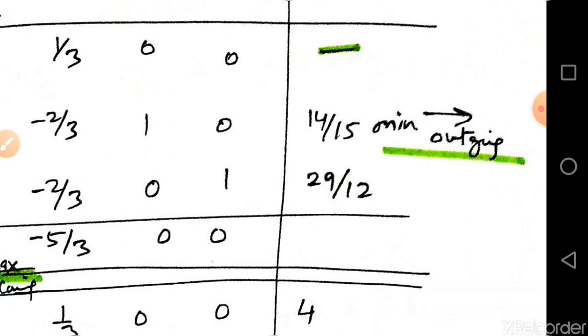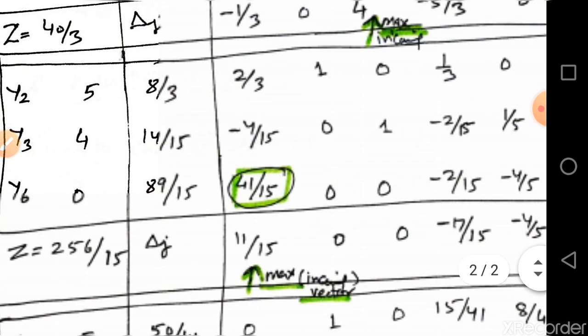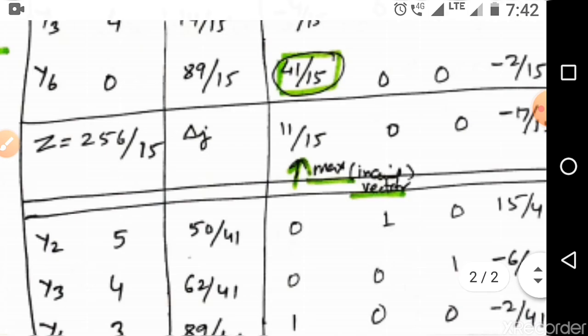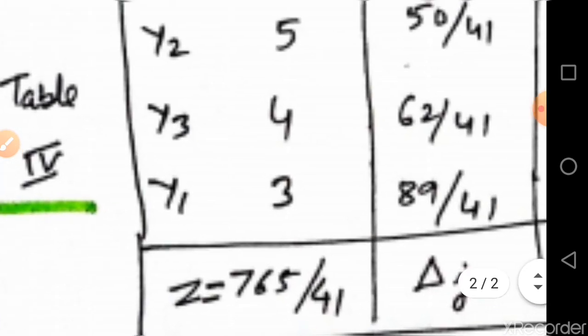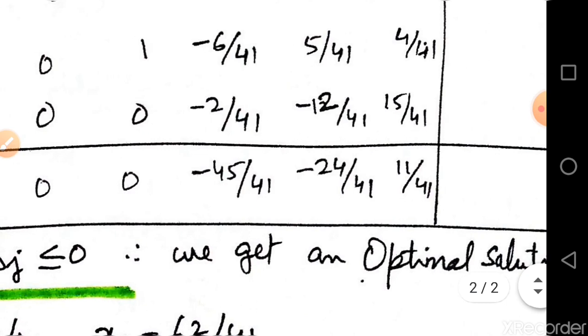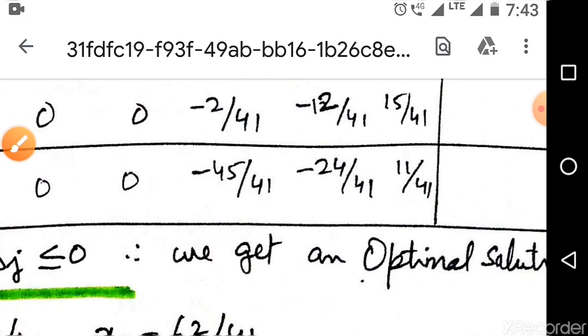Choose the minimum ratio, so that vector is outgoing. The intersection of the incoming row and outgoing vector gives pivot element 5. Repeating the same procedure gives Table 3, where y2 and y3 enter and y4, y6 are out. Repeating again gives Table 4, where all slack variables are out of the basis. Calculate Z, delta_j values: 0, 0, 0, then negative values including minus 11/41.